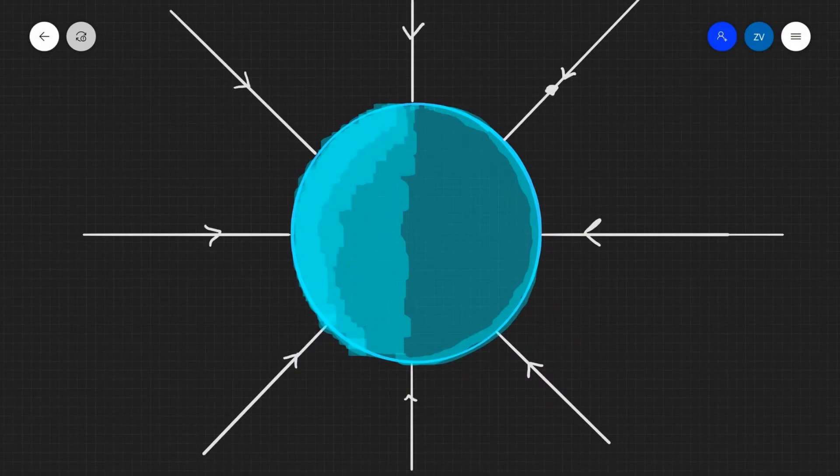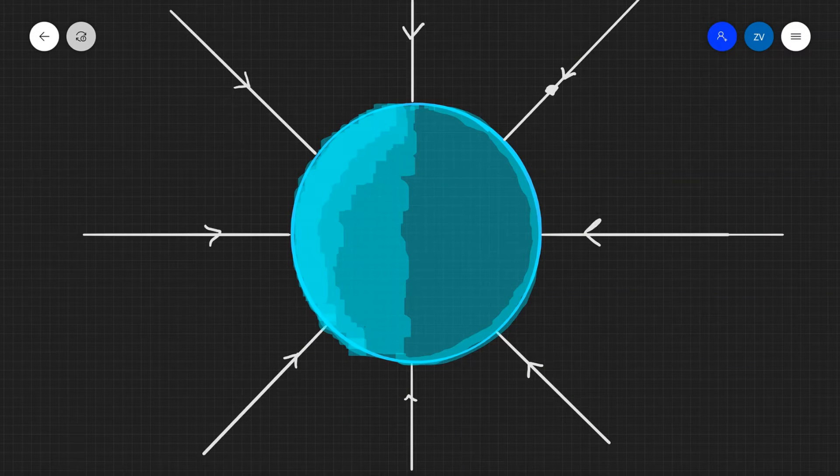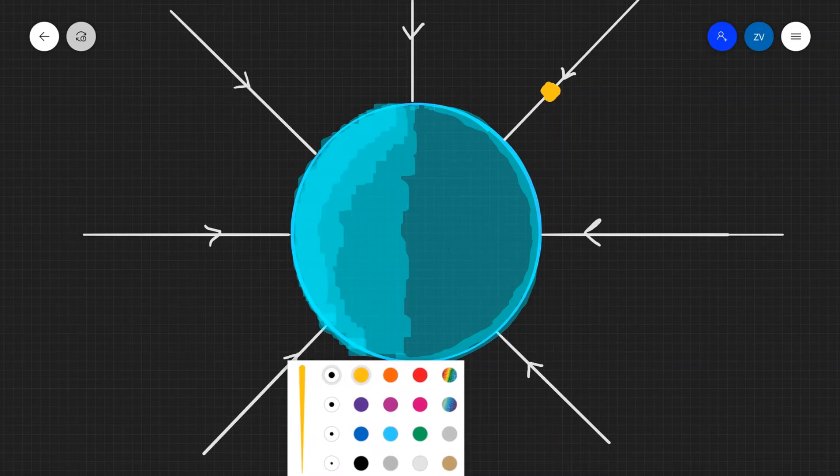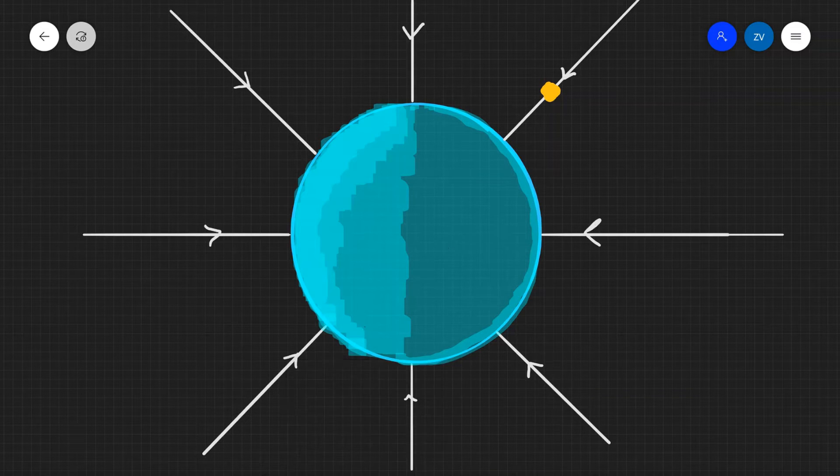For instance, if we have this little object over here in the gravitational field of this planet, this little yellow object is going to be attracted towards the planet and will experience a force in this direction towards the planet. This will be a gravitational force.